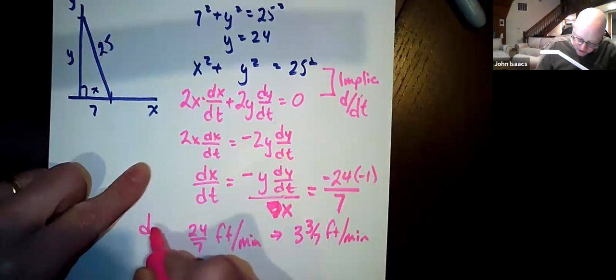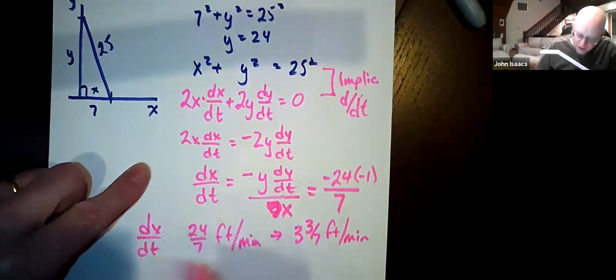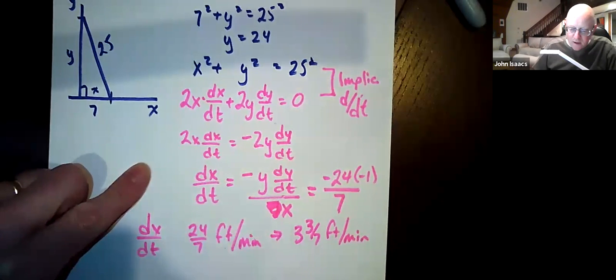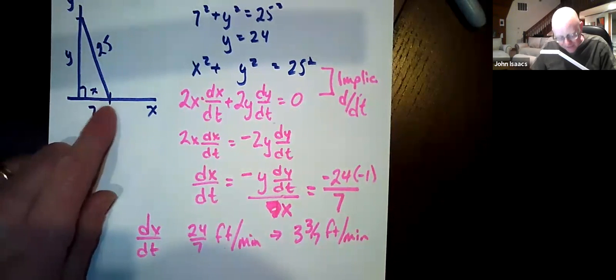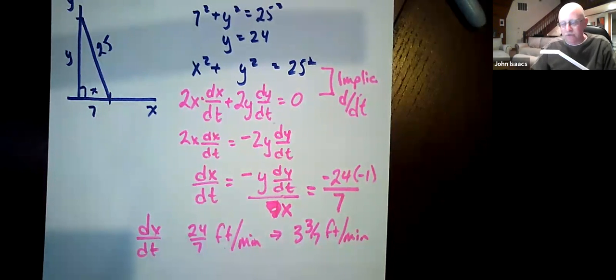That is dx/dt. That is the speed that the ladder is moving along the floor exactly at that moment, right? The instantaneous rate of change, right? So that's a related rates problem. We will do more of these on videos, but we're getting started with this one. So I hope this helps.